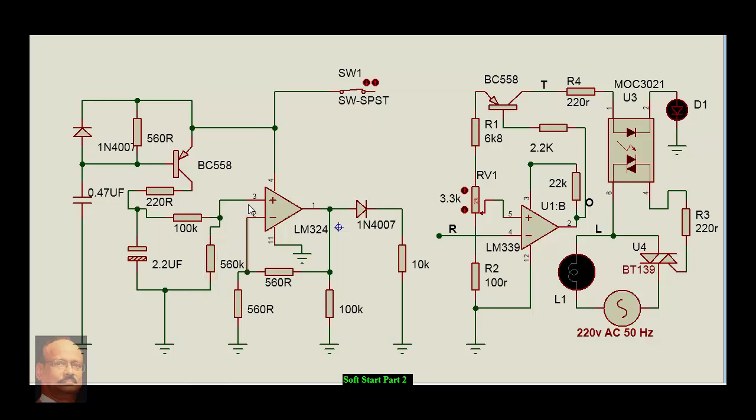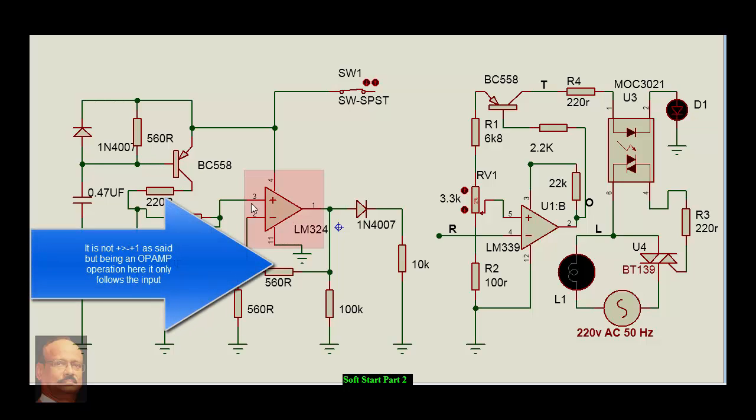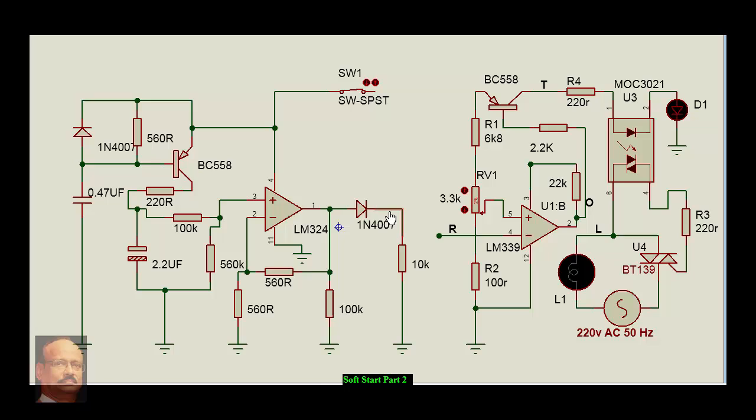This point will be gradually falling. Apply the formula: when plus is more than minus, output equals 1. When this voltage gradually falls, this voltage will also gradually fall. This voltage ultimately we will feed to this point. Now we will remove this manual connection and give this point instead.